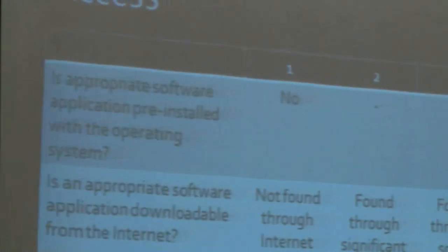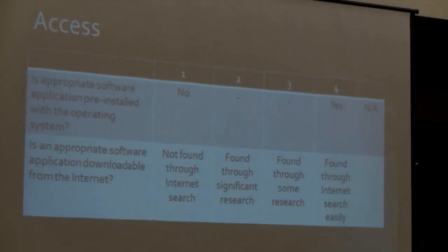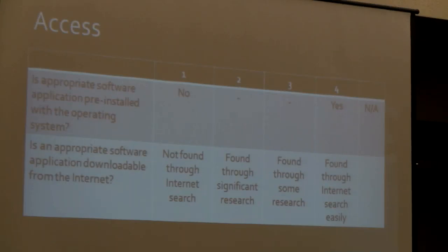Let's talk about the first part of the rubric: access. Four on the high meaning highly reusable, one on the low. First question: is the appropriate software application pre-installed in the operating system? Can I open WordPad or TextEdit and use it? Second question: is the appropriate software available and downloadable from the Internet? Can I find it through an Internet search? Then: is it not found, or did it require significant research? We've kept that deliberately vague — we haven't operationalized it to say I had to use ten keywords or Boolean operators.